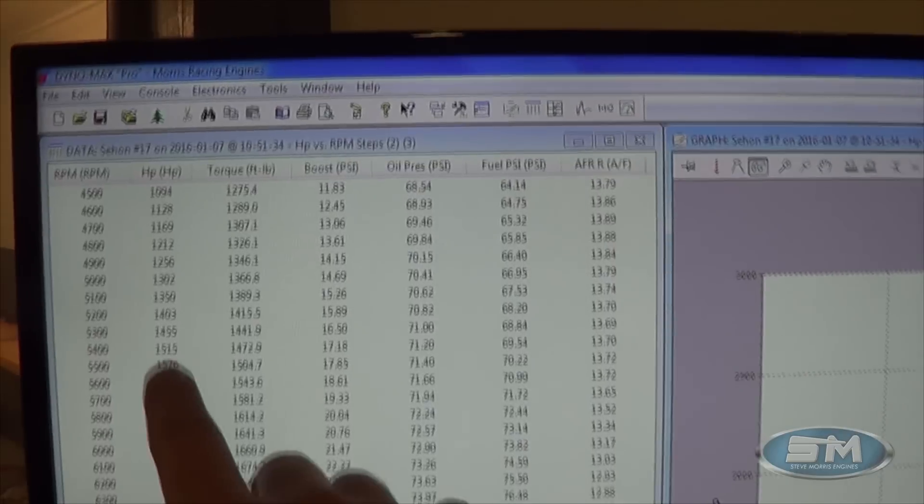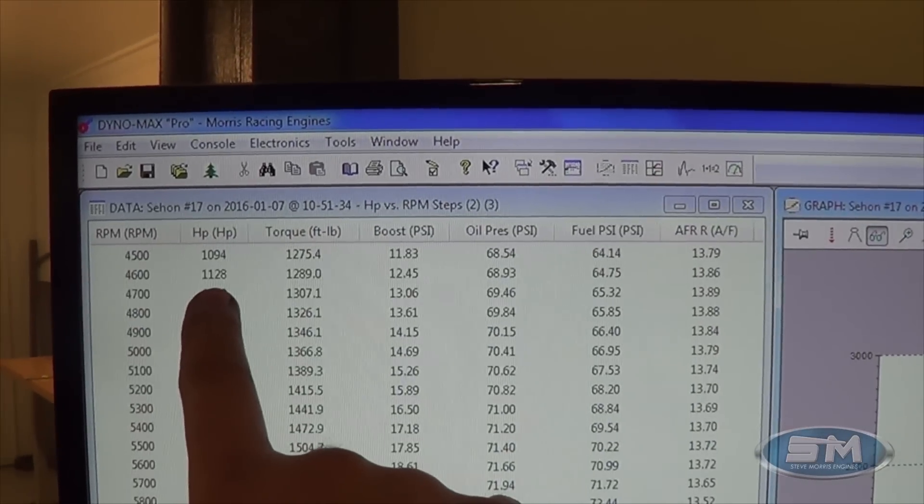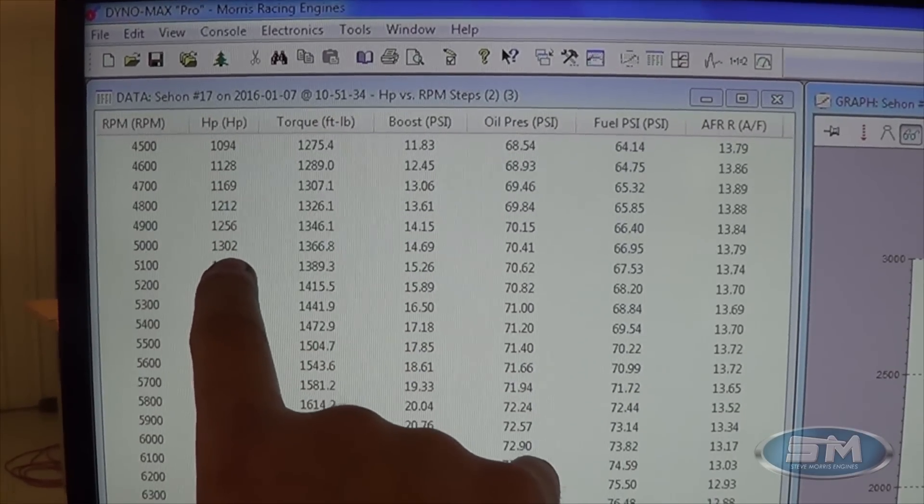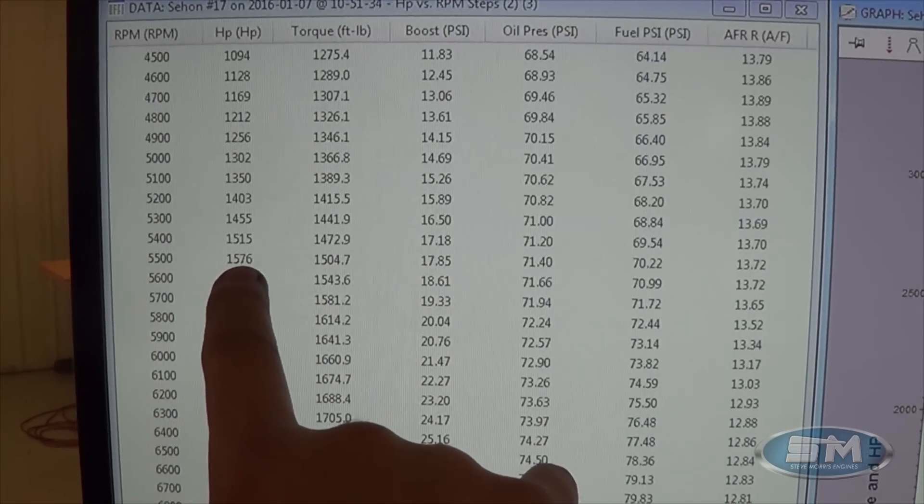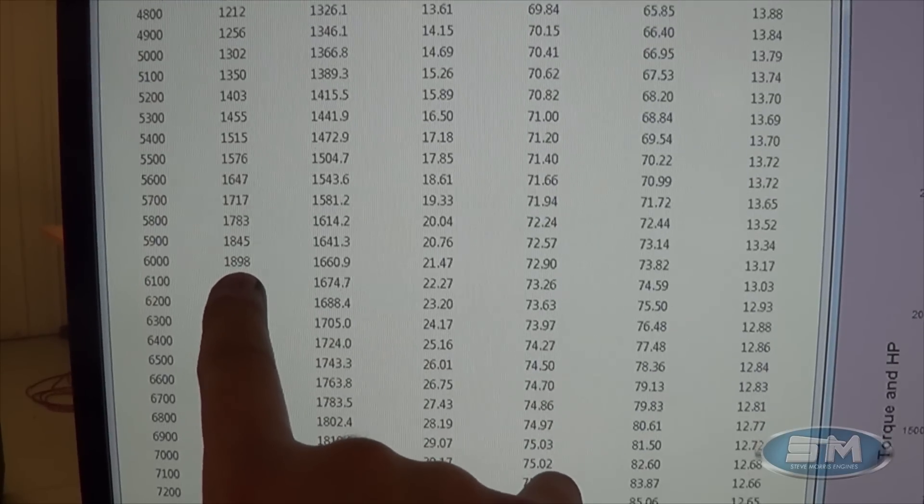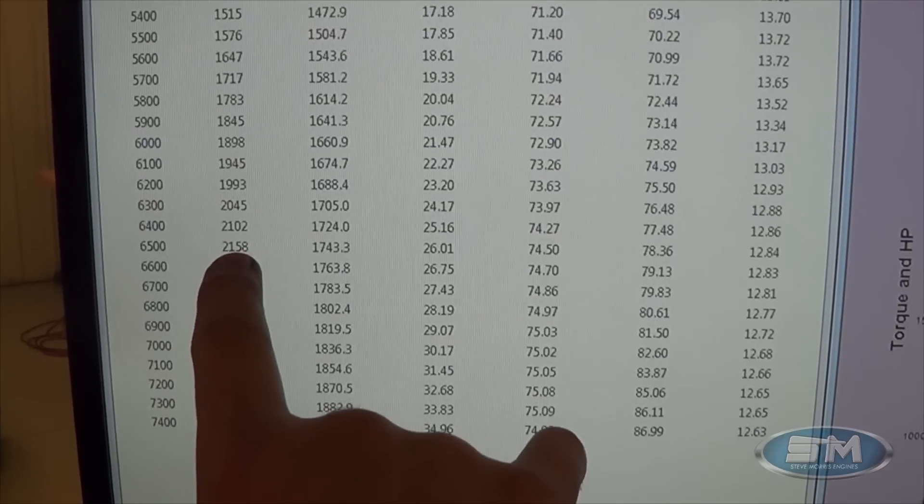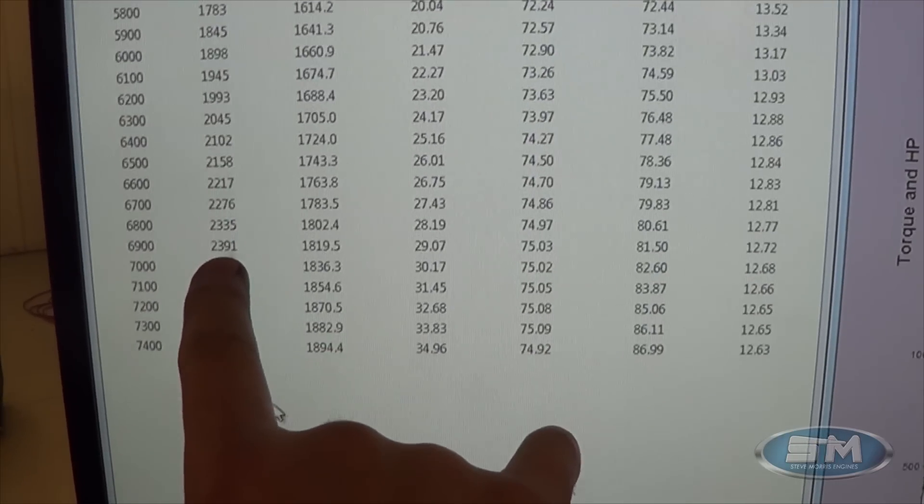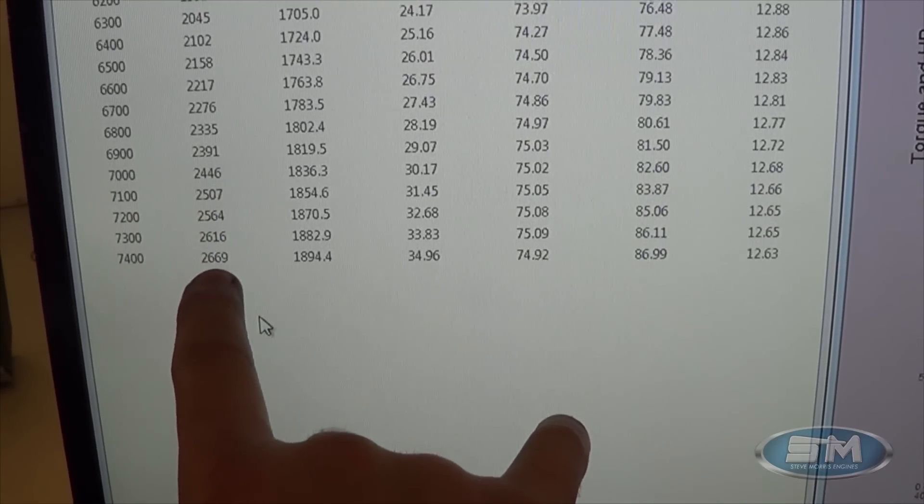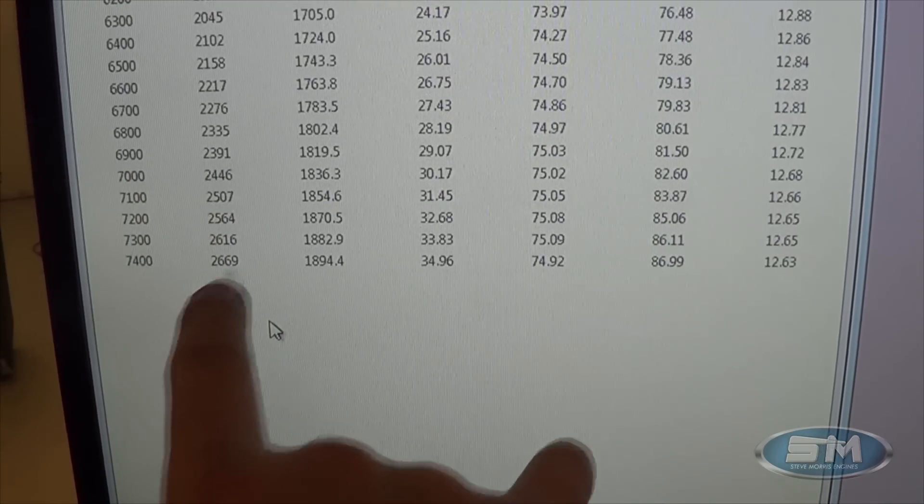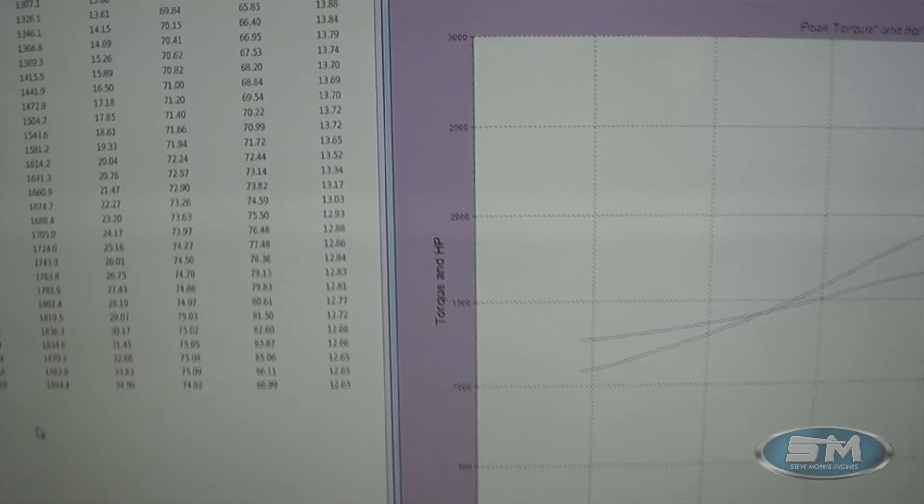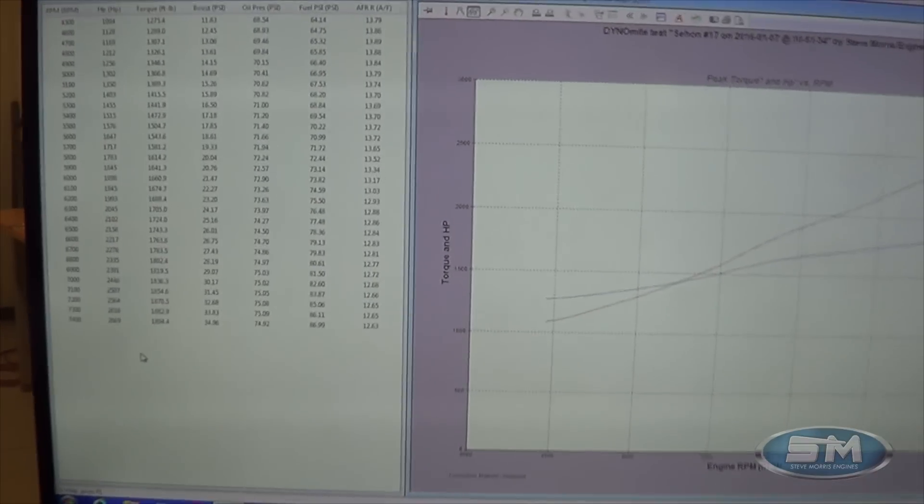As you can see here, a real nice piece. At 4,500 we're at 1,094. At 5,000 we're at 1,302. 5,500 we're at 1,576. 6,000 we're at 1,898. 6,500 is 2,158. 7,000 we're at 2,446, and 7,400 we're at 2,669.